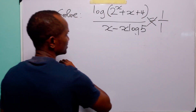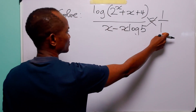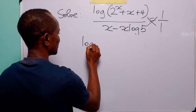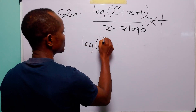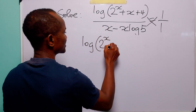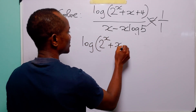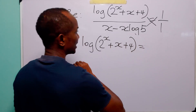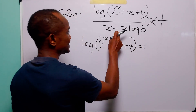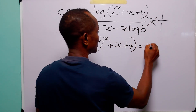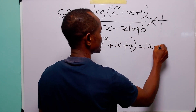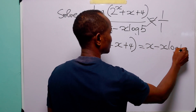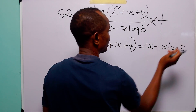When we do this, we have that the denominator times 1, that is log 2 to the power x plus x plus 4, is going to be equal to the denominator times 1, that is x minus x log 5.